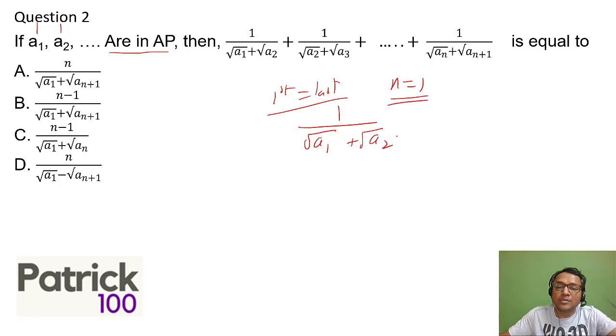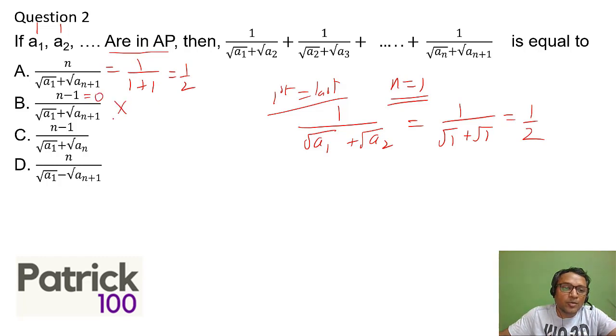If I put n equal to 1, now I've taken all as 1, 1, so root of 1 plus root of 1 that will be 1 upon 2. Substitute, I've taken n equal to 1 so this becomes 1 upon 1 plus 1 which is half, satisfies. This numerator becomes 0, not possible. Here also numerator becomes 0, not possible. Here numerator becomes 1 but denominator becomes 0, again not possible.